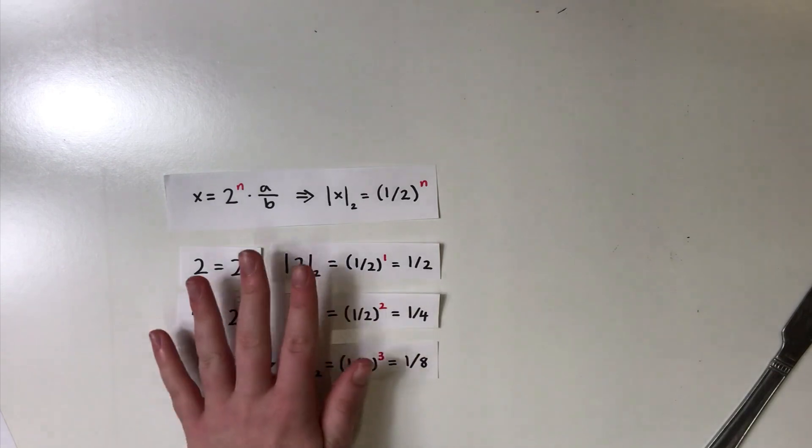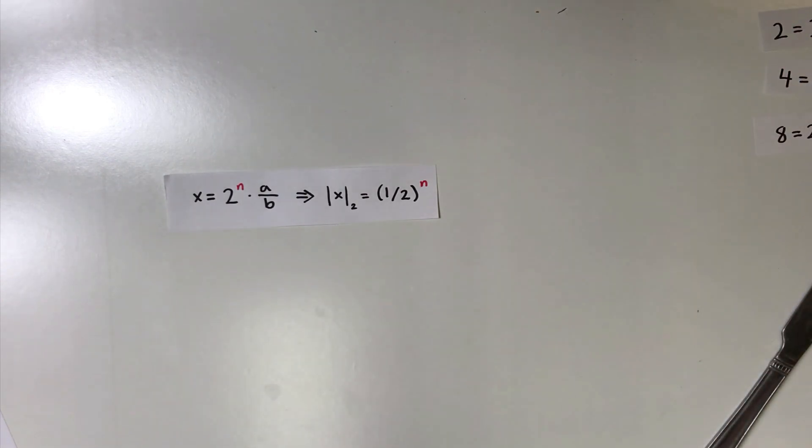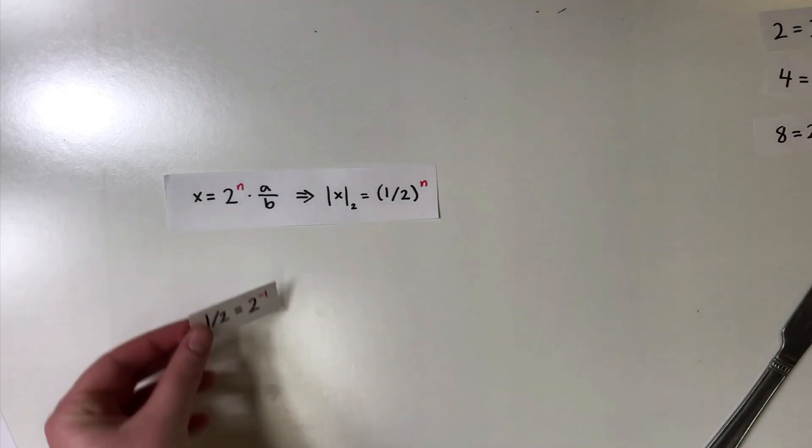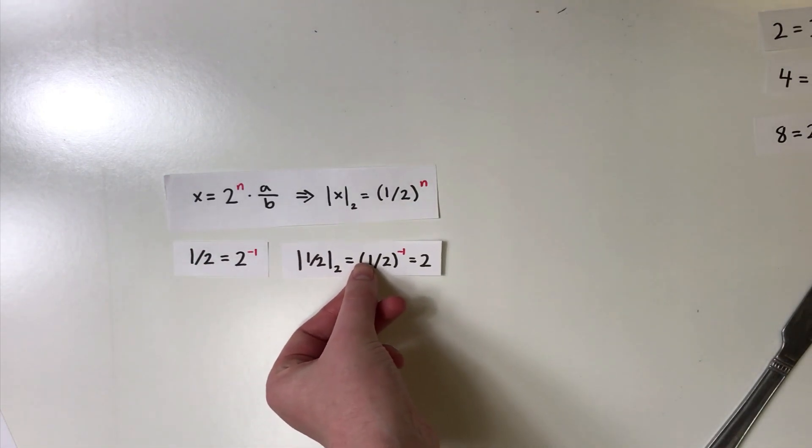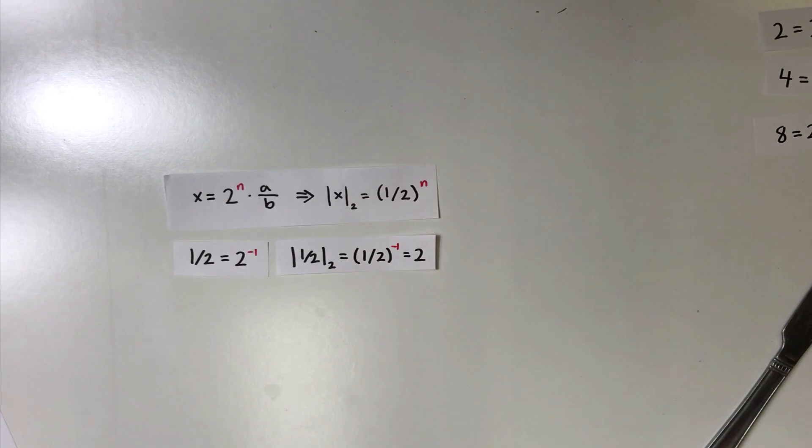For example, for 1 over 2, it has negative 1 power of 2 in it. This means that the 2-adic valuation of 1 over 2 is 2.